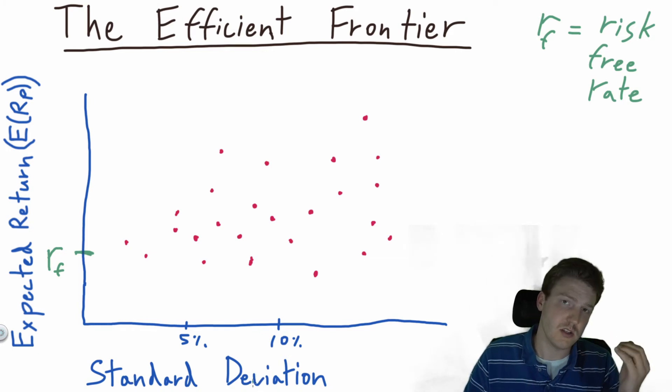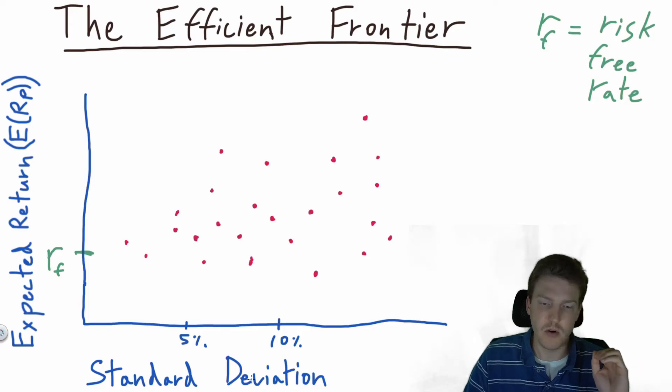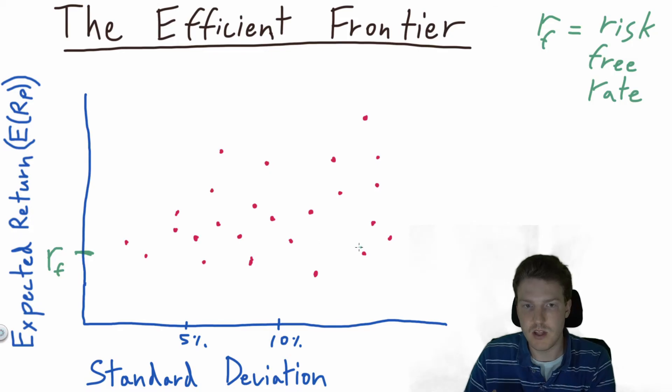Each one of these red dots represents a potential portfolio - a combination of asset weights that results in a portfolio with a certain level of return versus a certain level of standard deviation.